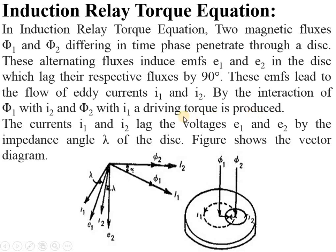We know that whenever there are two quantities present, those two quantities are responsible for torque production. The currents i1 and i2 lag the voltages e1 and e2 by the impedance angle λ of the disc.